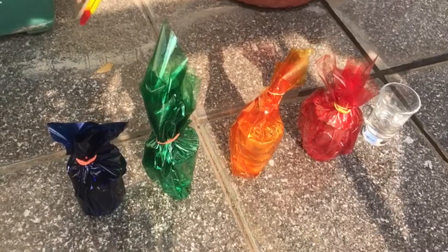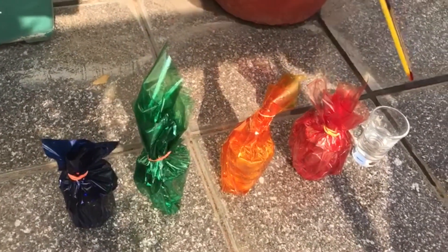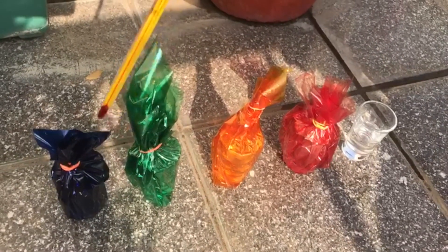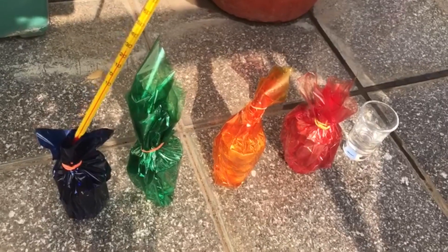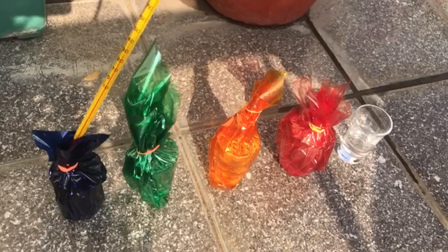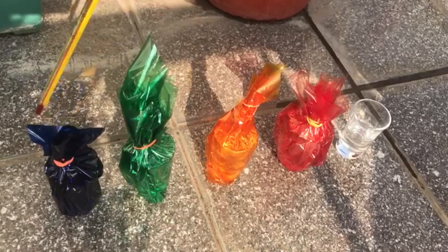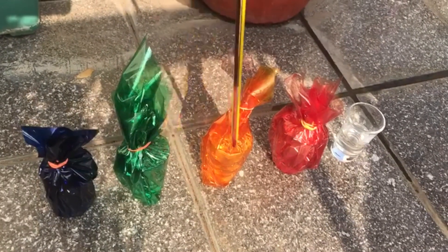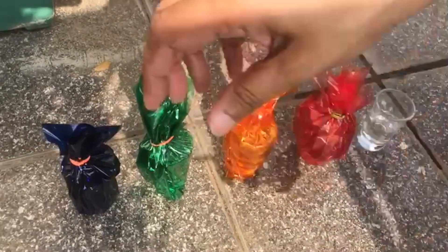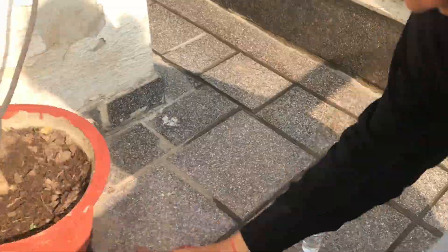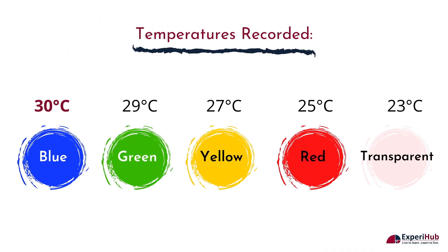Now, we are going to record the temperatures of water in all the glasses and try to see how dark colors absorb more light and convert it into more thermal energy or heat. The water in the glass covered by the blue cellophane sheet had the highest temperature of 30 degrees, followed by green at 29, yellow at 27, red at 25, and the transparent one had a temperature of 23 degrees.